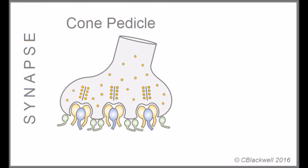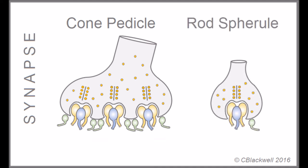Looking much more closely, cone synapses, called pedicles, tend to be large and relatively flat and connect to many other cells. Rod synapses, called spherules, tend to be smaller and round and connect to a few other cells.